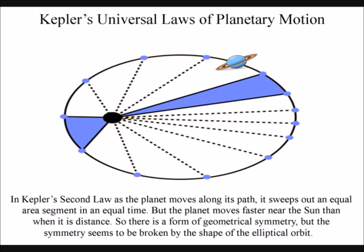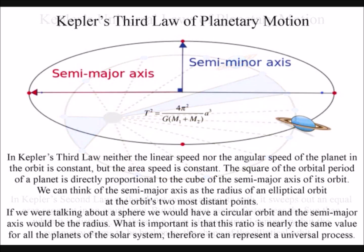In Kepler's third law, neither the linear speed nor the angular speed of the planet in the orbit is constant. The square of the orbital period of a planet is directly proportional to the cube of the semi-major axis of its orbit.